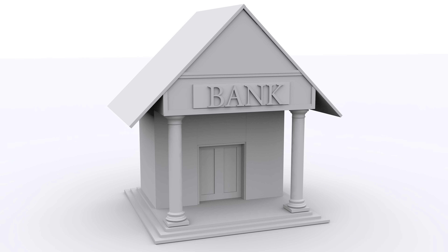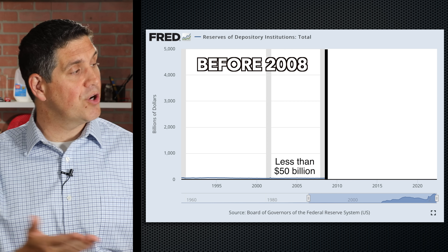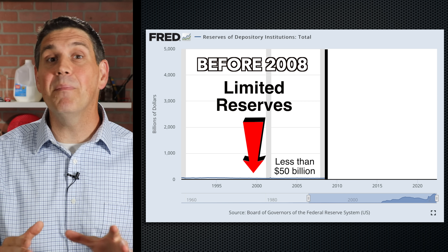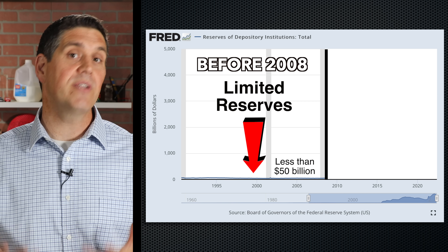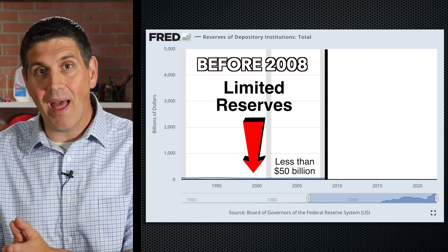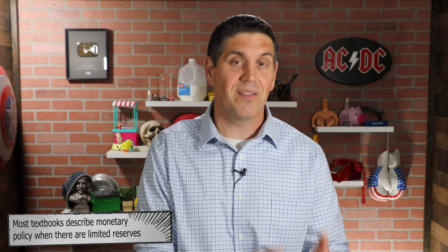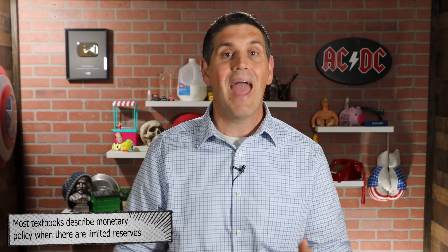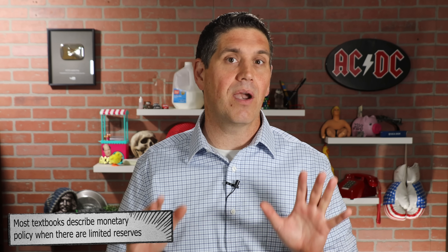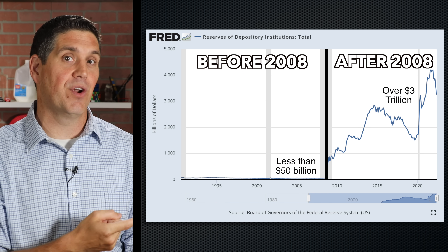The banking system before the 2008 financial crisis looked different than it does today. Back then, commercial banks held very few reserves with the central bank and instead loaned that money to customers or to other banks. This is a banking system with limited reserves, and it's the one that you see in your textbook. Since commercial banks had very few excess reserves, a small change in the money supply had a noticeable effect on interest rates. When the central bank bought bonds from commercial banks, that money would be loaned out quickly, increasing the money supply and decreasing interest rates. That's textbook monetary policy.